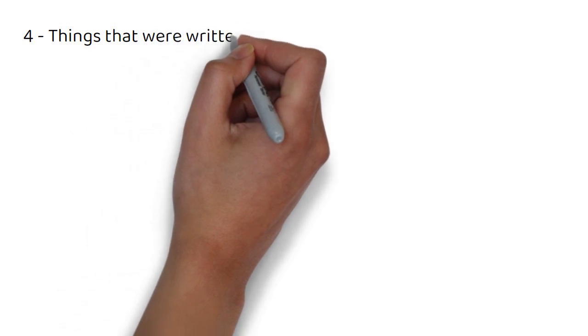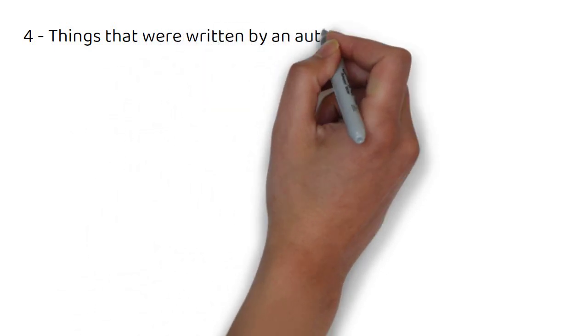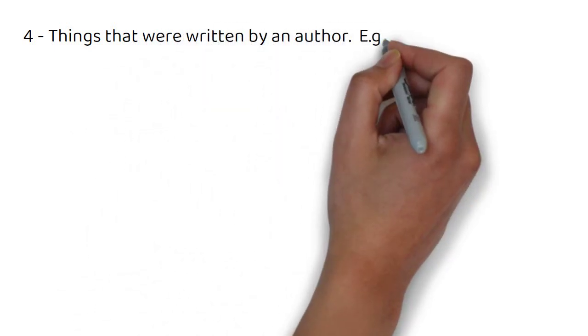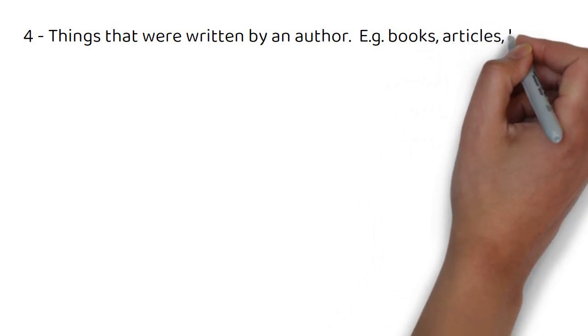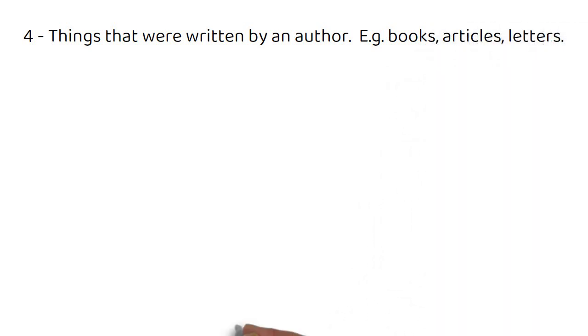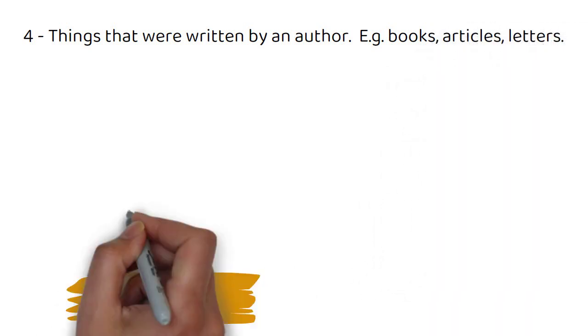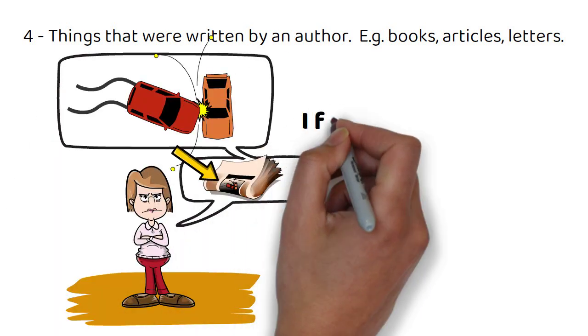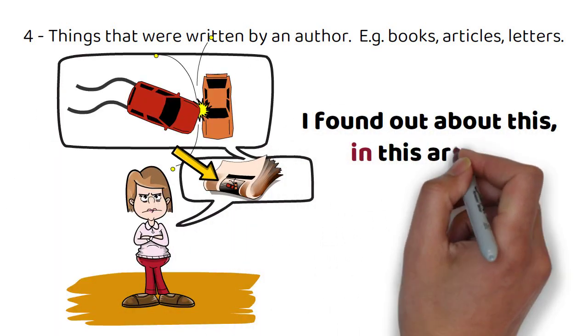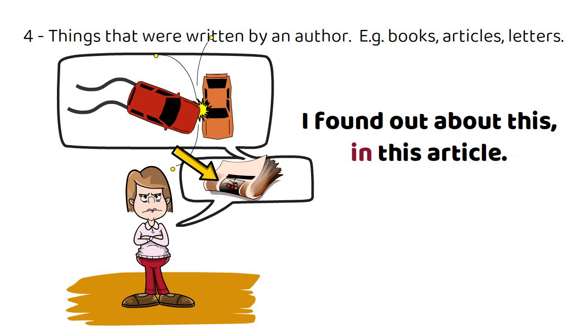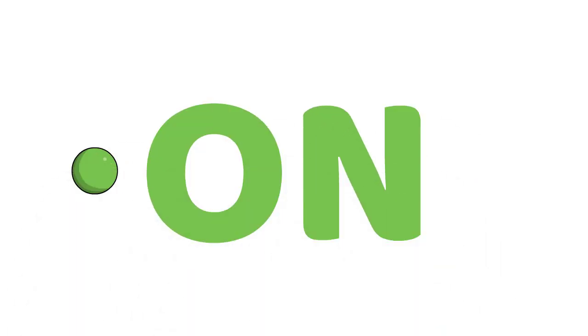Number four: things that were written by an author, for example books, articles, or letters. For example, I found out about this in this article. Alright. Let's now move on to the preposition on.